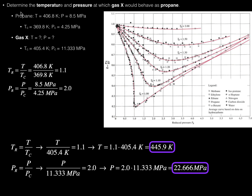The key is you would need at least one gas where you know everything — in this case, that's propane: its experimentally determined temperature and pressure, and its critical temperature and critical pressure. For the other gas, which you're trying to mimic the first, you don't know the temperature and pressure, but you would still need to know its critical temperature and critical pressure. Then you just solve it like this.